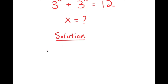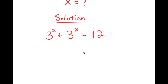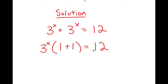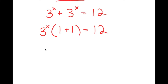Let me first rewrite my equation down here so I have a little more solving space. My equation is 3 to the power of x plus 3 to the power of x is equal to 12. The first thing I'm going to do is factor out 3 to the power of x from my left-hand side. So I get 3 to the power of x times — well, 3 to the power of x divided by 3 to the power of x is 1 — so 1 plus 1 is equal to 12, and 1 plus 1 is 2. So I get 3 to the power of x times 2 is equal to 12.